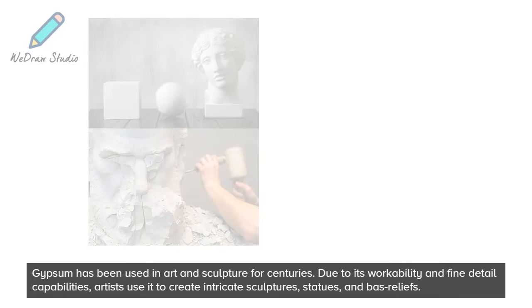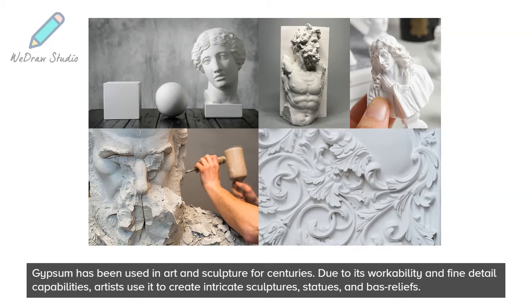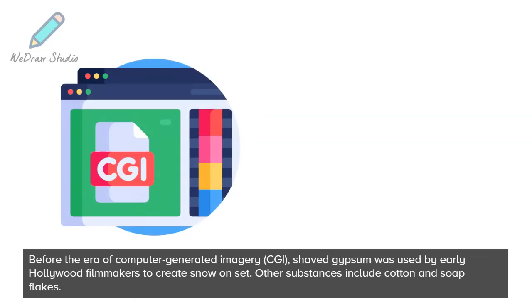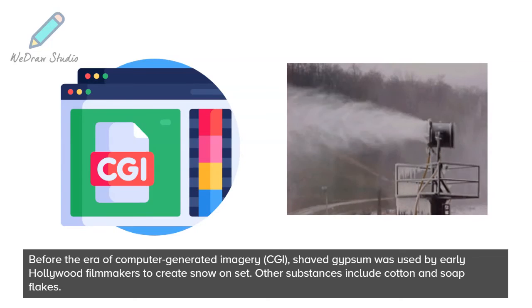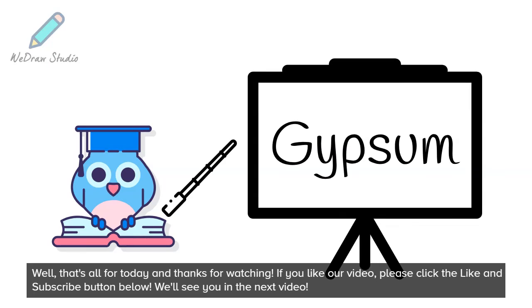Gypsum has been used in art and sculpture for centuries due to its workability and fine detail capabilities. Artists use it to create intricate sculptures, statues, and bas-reliefs. Before the era of computer-generated imagery, shaved gypsum was used by early Hollywood filmmakers to create snow on set, alongside other substances like cotton and soap flakes.